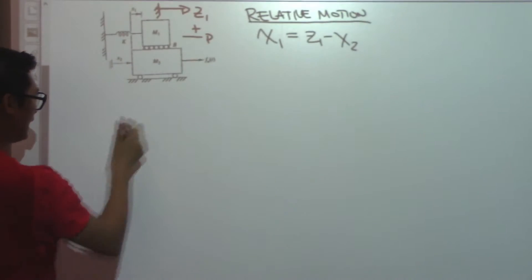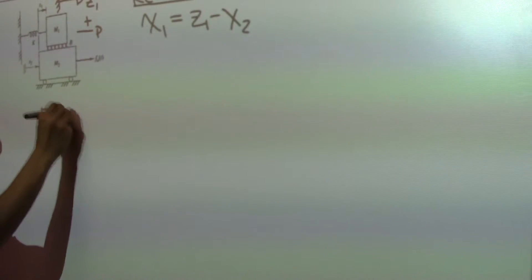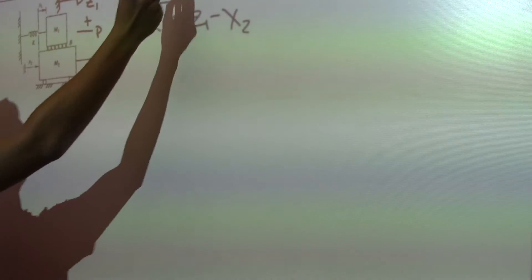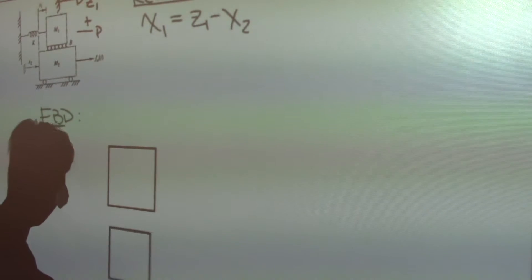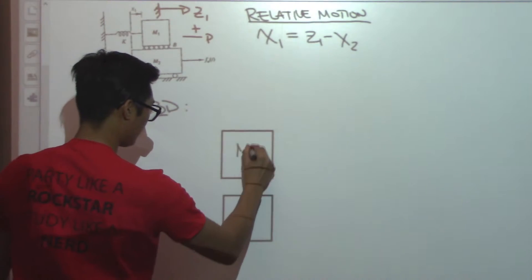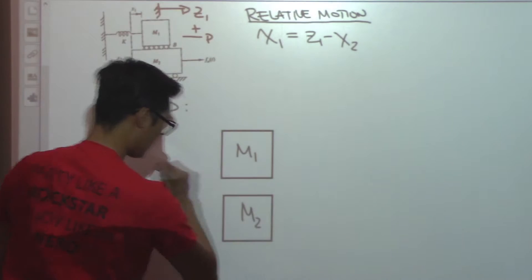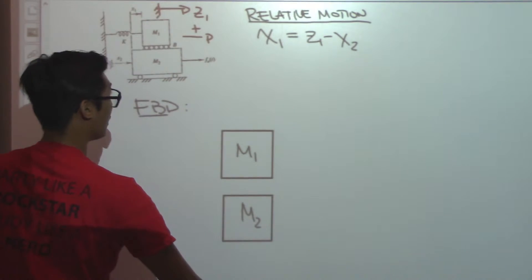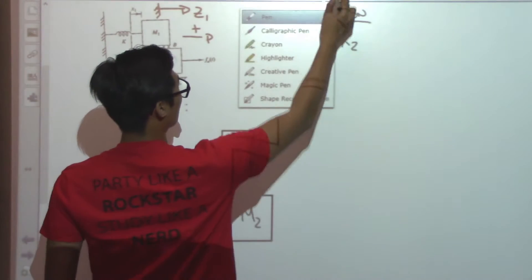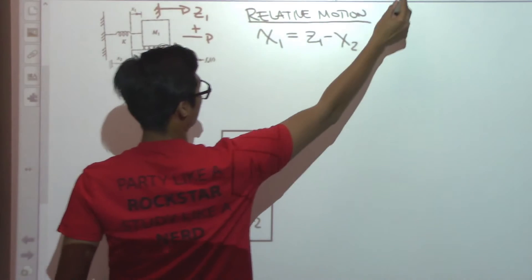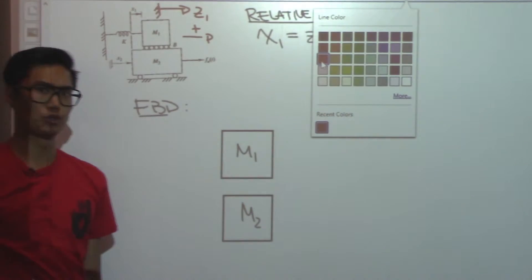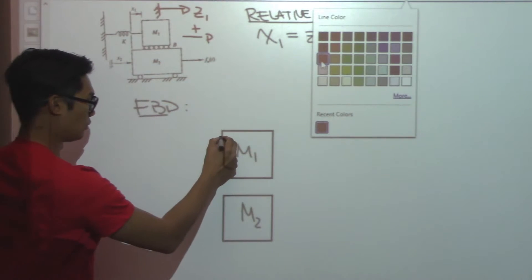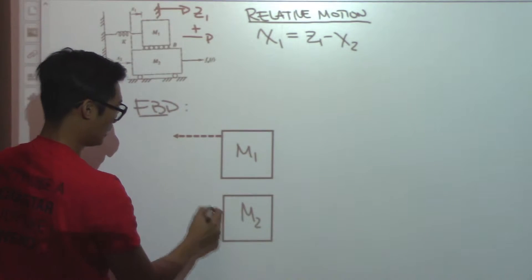And to really get into the solution here, we have to start drawing the free body diagrams. So I'm going to have mass 1 and mass 2. Now let's start drawing here the forces acting on this block. So I see that both blocks are moving towards the right. So that tells me that the inertial force should be going towards the left.